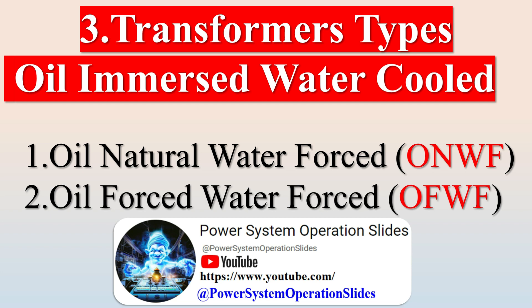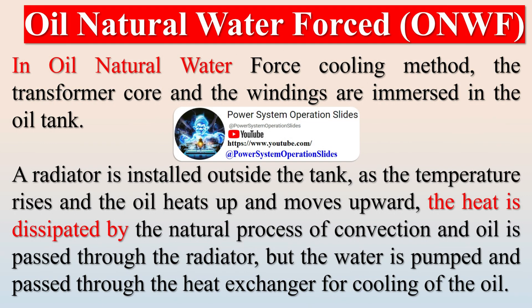In Oil Forced Air Forced (OFAF) cooling, the heated oil is circulated from the top of the transformer tank to a heat exchanger, and a blast of air is forced through the heat exchanger by a fan. The cool oil is then returned to the bottom of the transformer tank. This method of cooling is used for higher rating transformers, such as those used in substations and generating stations.